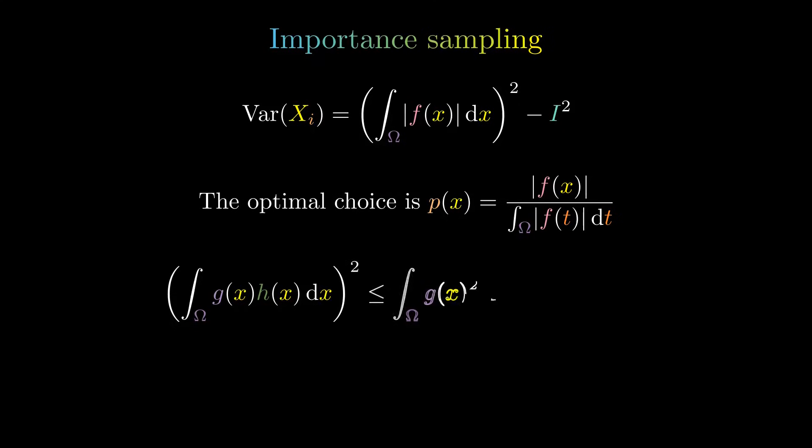Now we will prove that any choice of P will result in greater or equal variance.